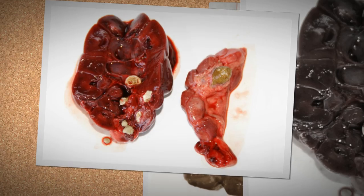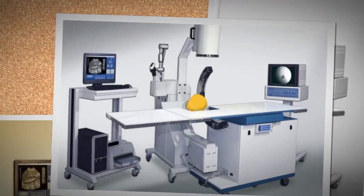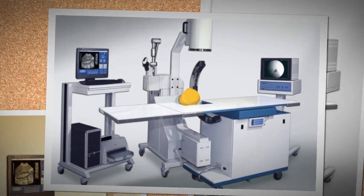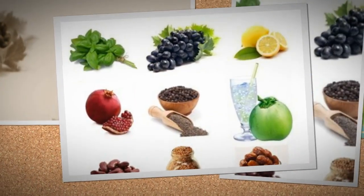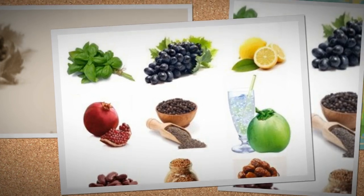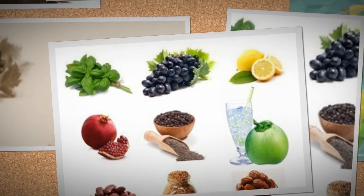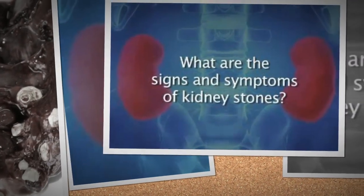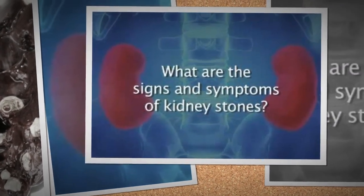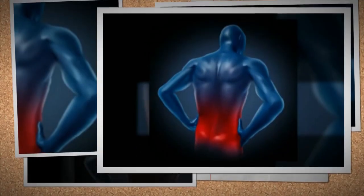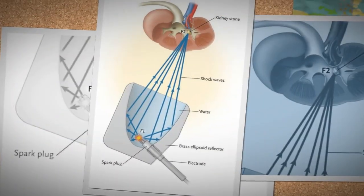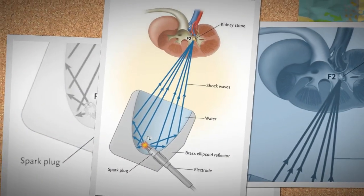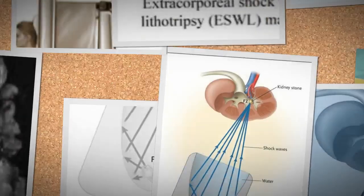Some of the methods used to remove the stones include shock waves, or extracorporeal shock wave lithotripsy — the use of a machine to send shock waves directly to the kidney stone to break a large stone into smaller stones that will then pass through the urinary system.